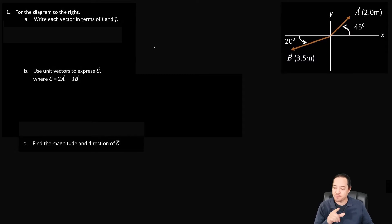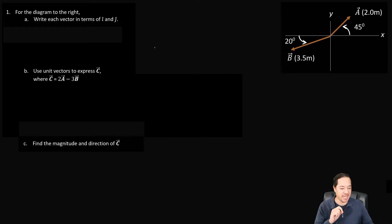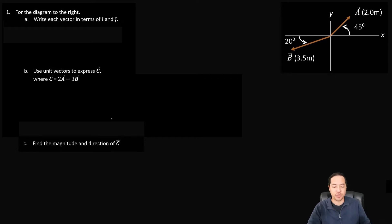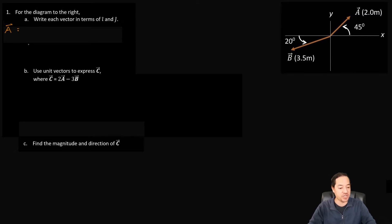All right, so let's continue here. Question one says, for the diagram to the right, we want to write each vector in terms of i-hat and j-hat. So we have two vectors, a and b, and we're going to write vector a in terms of i-hat and j-hat.